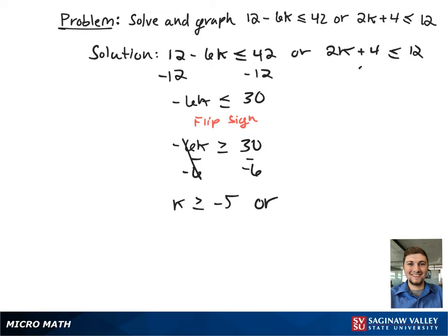Next, we have to work on the right-hand side of the beginning inequality. We subtract 4 from both sides, and this gives 2k is less than or equal to 8. To get k by itself, we divide both sides by 2, and this gives the final inequality on the right-hand side of k is less than or equal to 4.